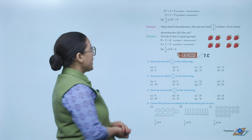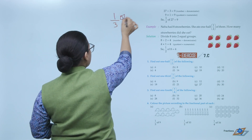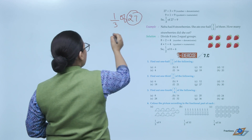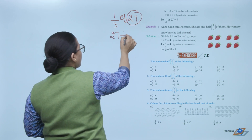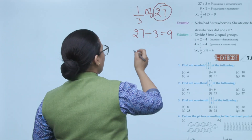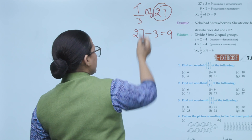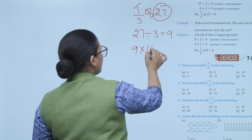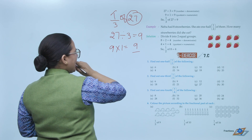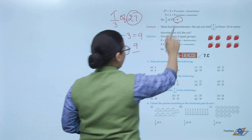To find 1 third of 27: divide 27 by the denominator 3, which gives 9. Then multiply 9 by the numerator 1, giving 9. So 1 by 3 of 27 equals 9.